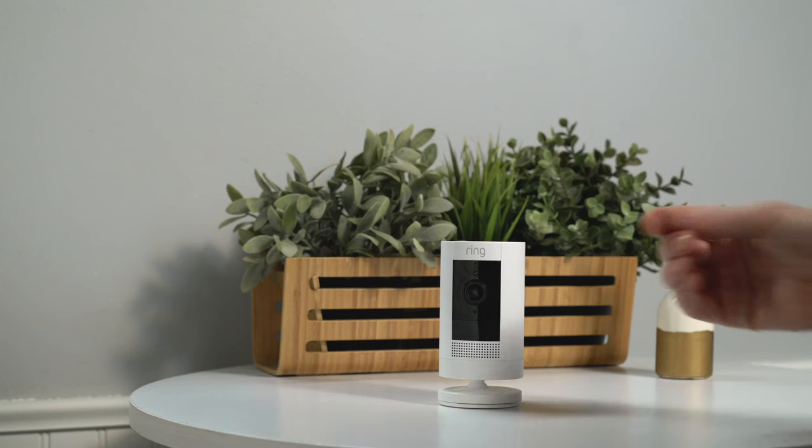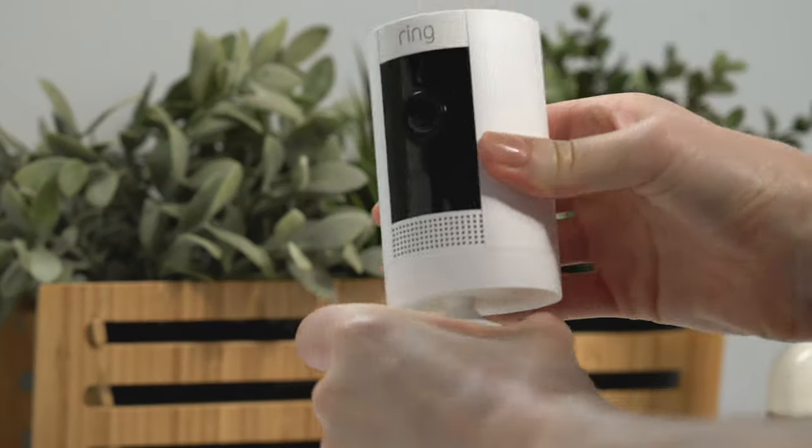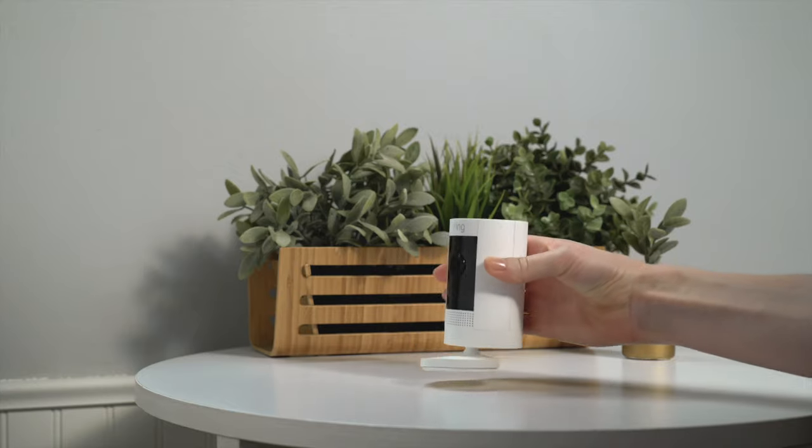To get a downward view from your Stick Up Cam, rotate the base so the longer side faces the front. Then tilt the camera down to your chosen angle.